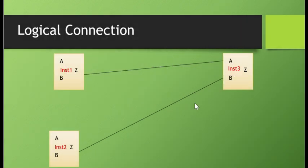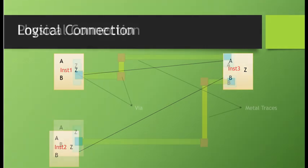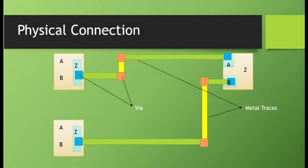Now let's look at the logical connection of three instances in the netlist. The inputs of instance 3 are coming from the output of instance 1 and 2. Now let's see how this will translate into a physical connection. As you can see, the output pin of instance 1 is connected to the input pin of instance 3 through metal traces and vias. The horizontal metal is differently color-coded to the vertical metal because these will be in different layers, and this horizontal and vertical metal are connected through a via.